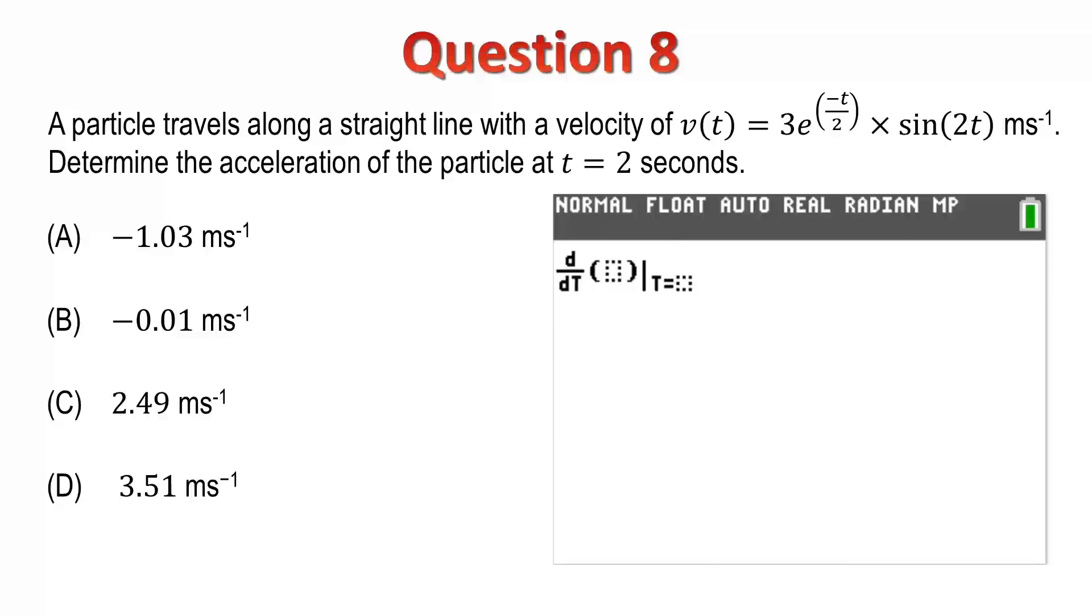When we work out the derivative, you can use x as the variable to speed things up a little. However, I'll demonstrate here that you can use t as the variable simply by using the alpha key. We calculate the numerical derivative of our function, when t equals 2, and we get an answer of approximately negative 1.03. So, we'll select the correct answer as option A.